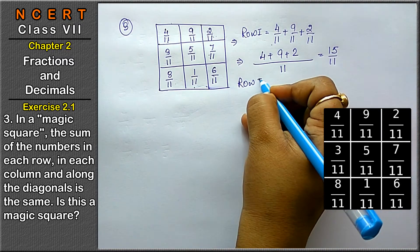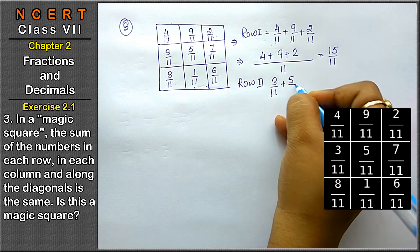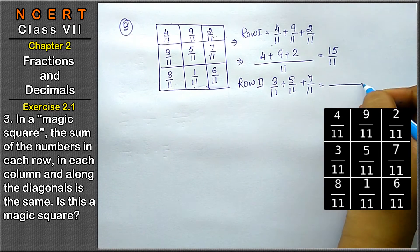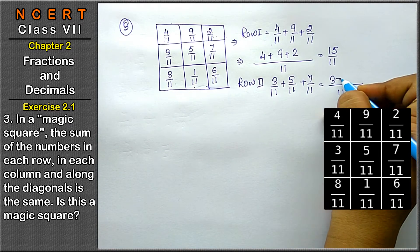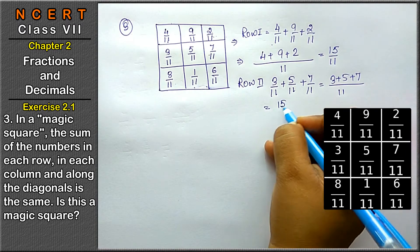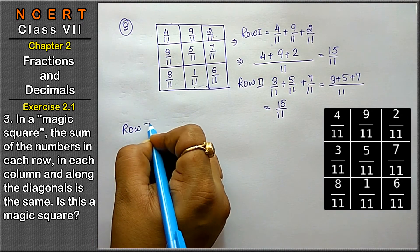Next row, let's see. Next row, 3 upon 11 plus 5 upon 11 plus 7 upon 11. Let's take the LCM 11. 3 plus 5 plus 7, that means 15 upon 11 is the answer. Let's take the row third.